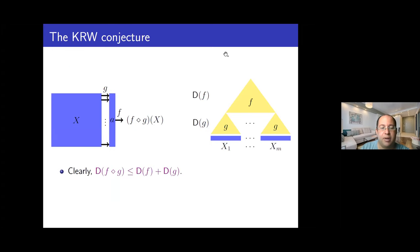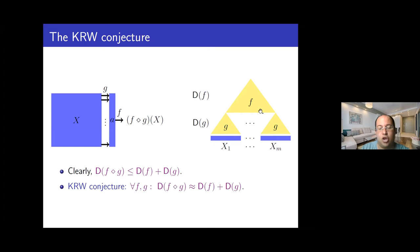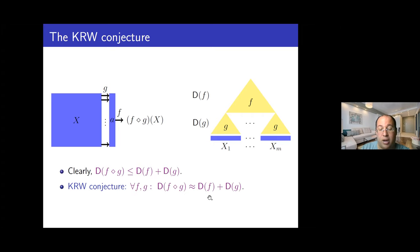There is an obvious upper bound: the depth complexity of the composed function is at most the sum of the depth complexities, because if we compute the composition just according to the formula described, we get a circuit of this depth. The question is, can we do better? And essentially, no — this is the best thing you can do. There are a few small caveats: when I say for every F and G, the functions F and G have to be non-constant. But otherwise, this is the strongest form of the conjecture that we do not know how to refute.